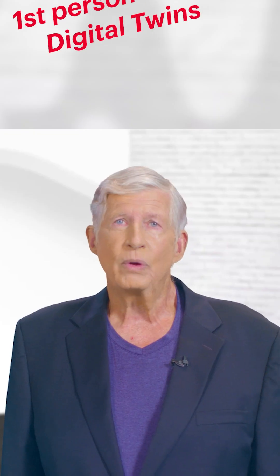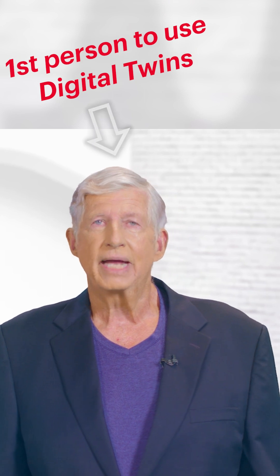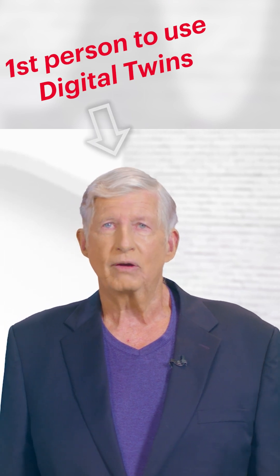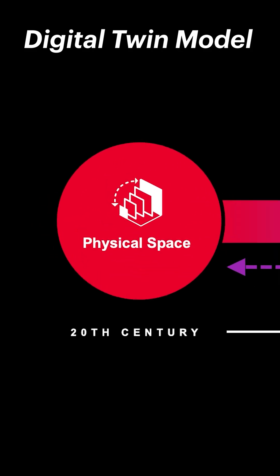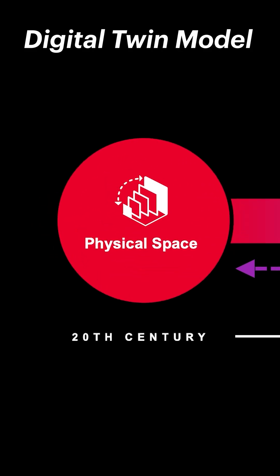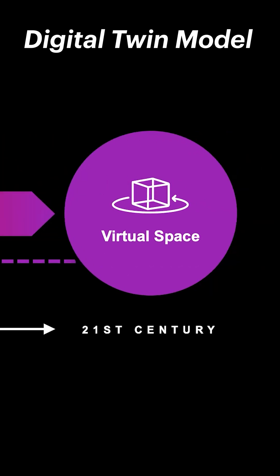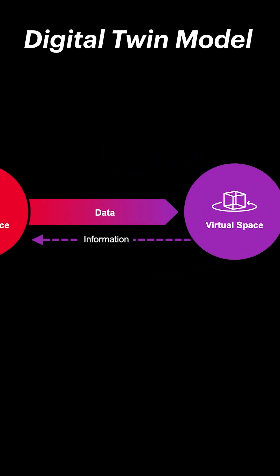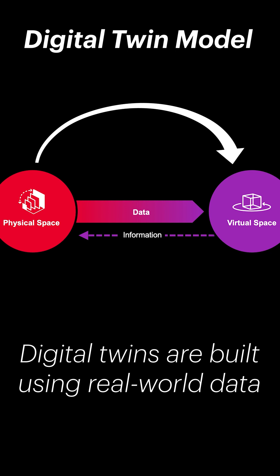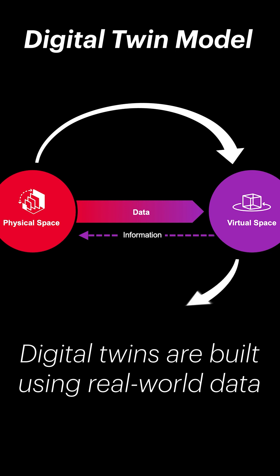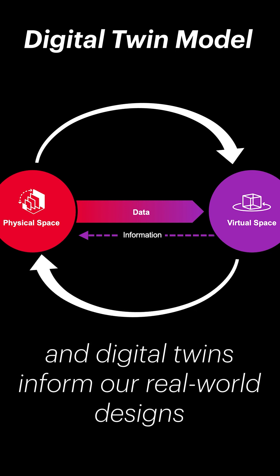Here's Michael Greaves. The digital twin model looks like this: it has the physical products that we've always had and virtual space. The third aspect is to have data that comes from the physical world and populates this virtual world.